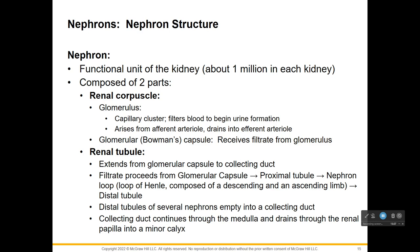The renal tubule extends from the glomerular capsule to the collecting duct. Filtrate from the glomerular capsule moves to the proximal tubule, then to the loop of Henle (also called the nephron loop), which has a descending limb going down and an ascending limb coming back up — it reminds me of a bobby pin. Then we're at the distal tubule, and the distal tubules come together to dump their fluid into the collecting duct, which drains through the renal papilla into the minor calyx, leading to the major calyx.